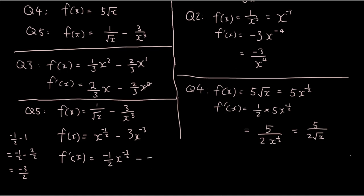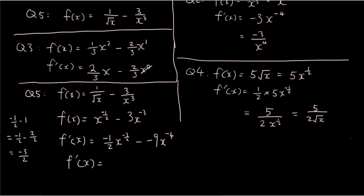Minus negative 3 times 3 is negative 9, x to the power of negative 4. So simplifying that, it becomes negative 1 over 2x to the power of 3 over 2. Two negatives together becomes a positive, plus 9x to the power of negative 4.